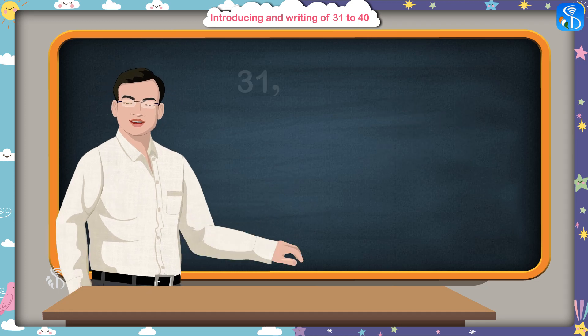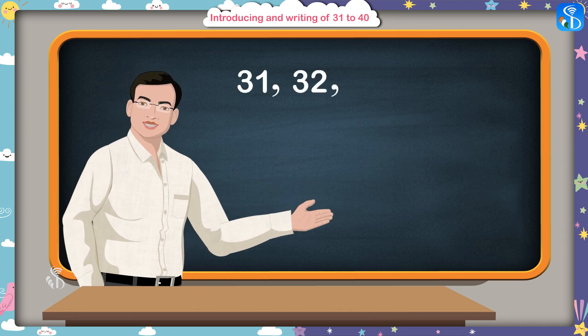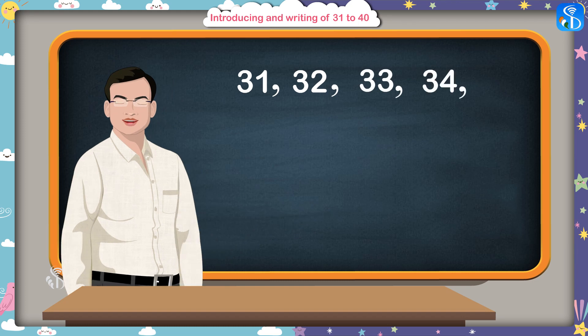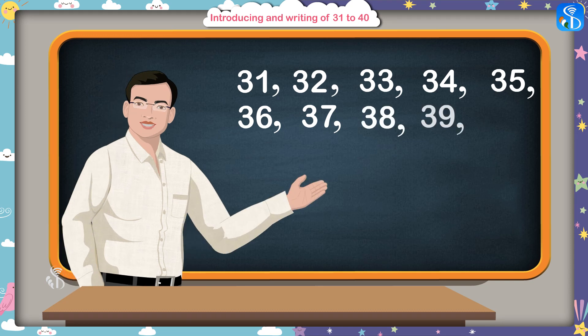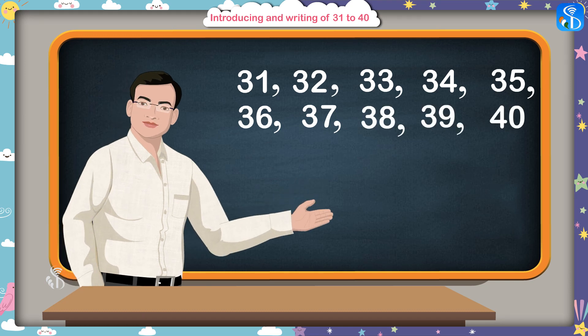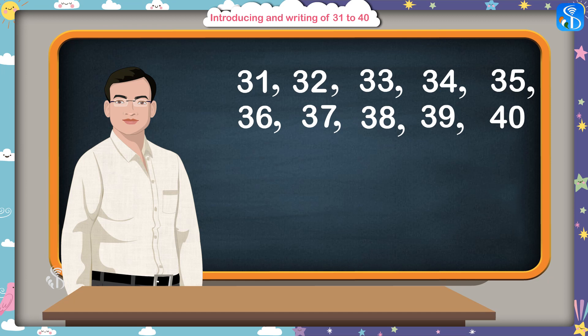In this manner, thirty-one, thirty-two, thirty-three, thirty-four, thirty-five, thirty-six, thirty-seven, thirty-eight, thirty-nine, forty. You can easily write numbers.